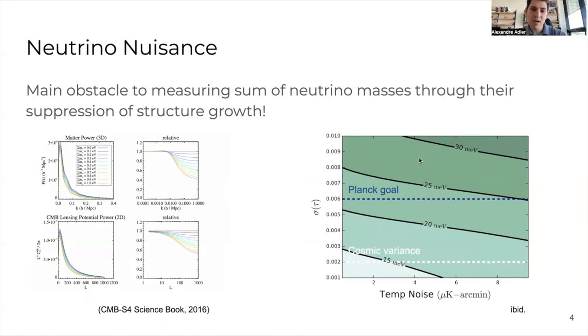To get a stronger limit on the sum of the neutrino masses, we need to get a much better constraint on sigma tau, the uncertainty on tau. Getting better detectors that are less noisy, or better maps with less noise, doesn't help as much as constraining tau.